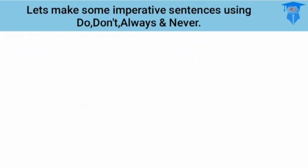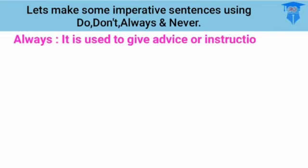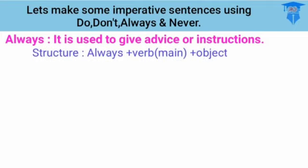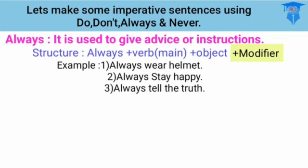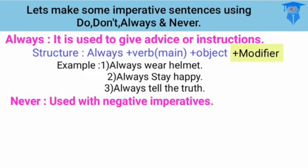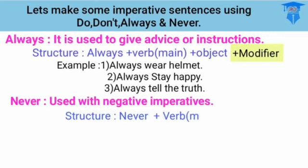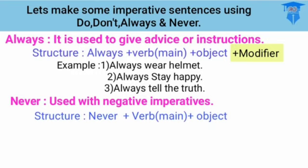Next, 'always' is used to give advice or instruction. The formula is: always + verb one + object — selalu menggunakan kata kerja pertama, tidak ada penambahan lainnya. For example: 'Always wear a helmet,' 'Always stay happy' or 'stay healthy,' 'Always tell the truth' — selalu mengatakannya sebenarnya.